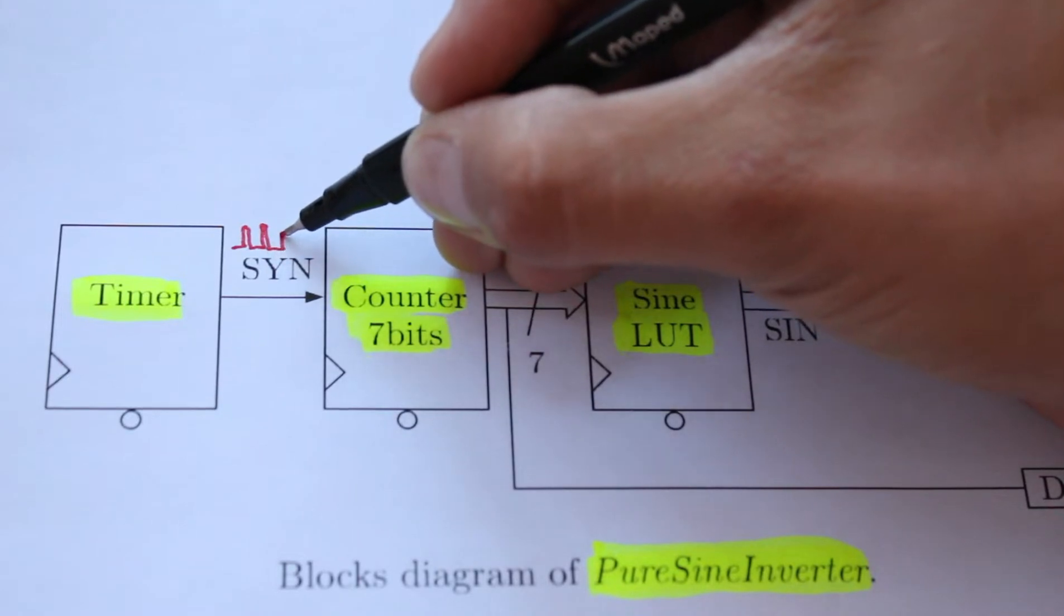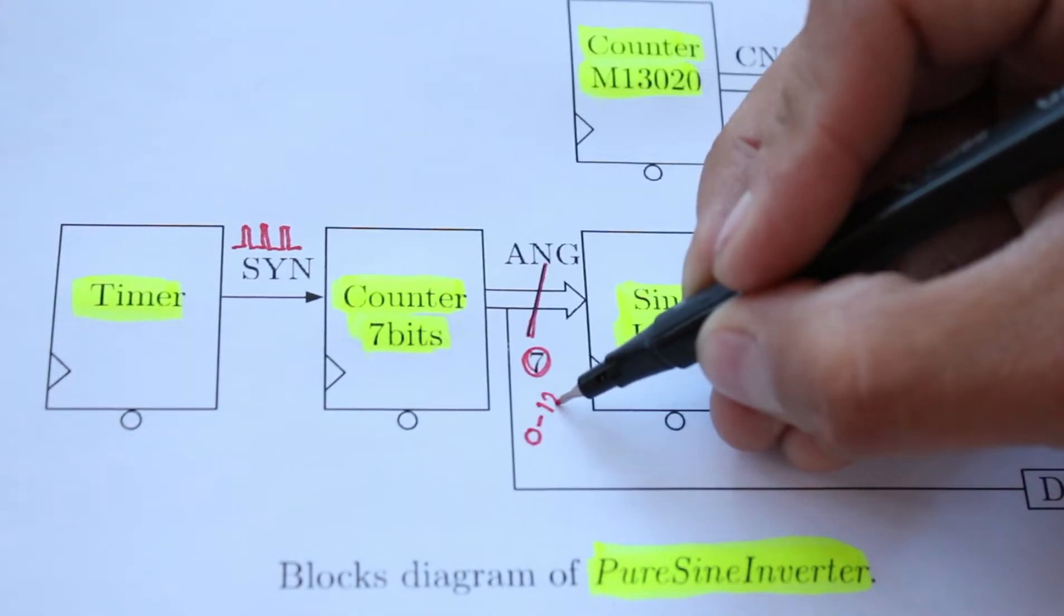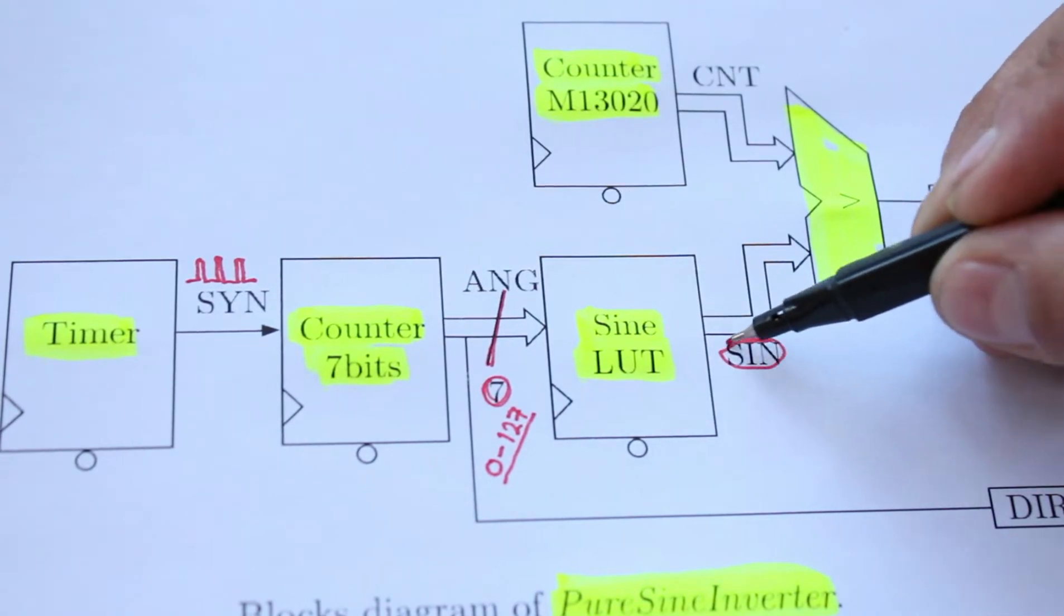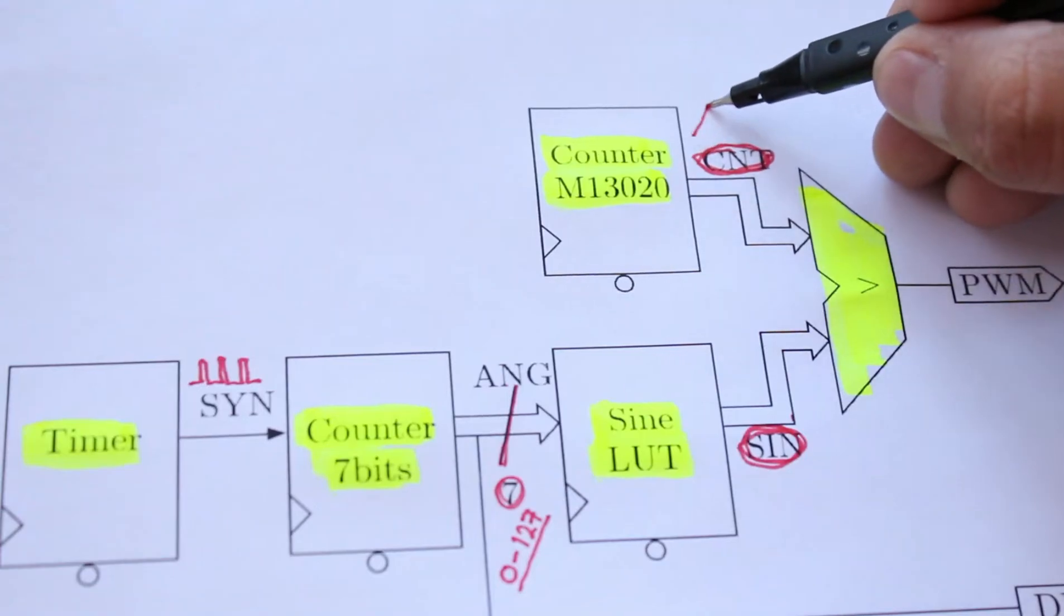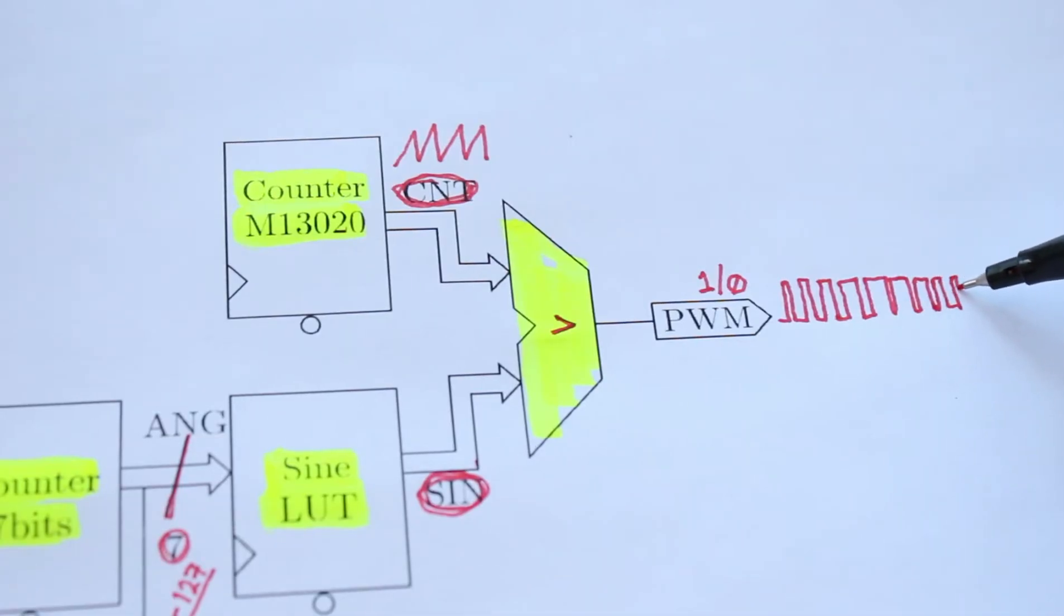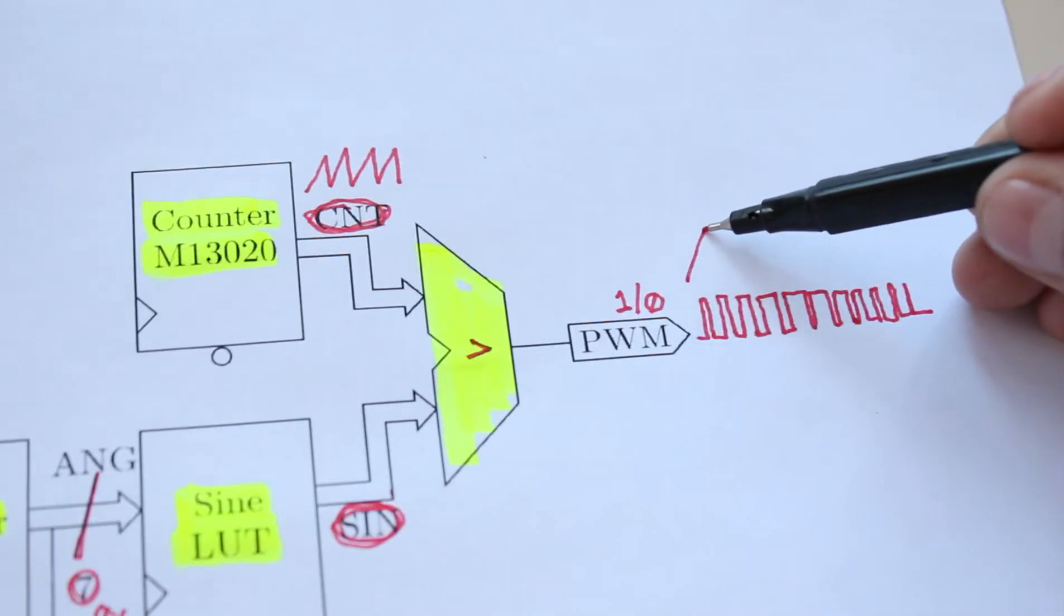The timer generates a pulse which increments the counter. This value may be seen as the corresponding angle. The sine ROM output is the magnitude of the sine, which is compared with the special purpose counter output. The resultant signal is commonly called a sinusoidal pulse width modulation, or SPWM.